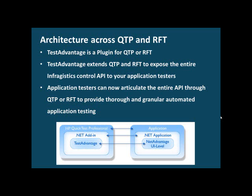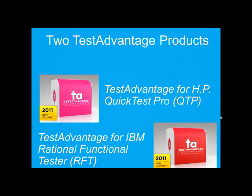Test Advantage is a plug-in that works with either QTP or RFT depending on which platform you buy it for. It works with Windows Forms controls and WPF controls — WPF support was still being worked on at the time of this video. Test Advantage is necessary whenever you are doing testing with Net Advantage controls on your forms. There are two products: one for QTP and one for RFT, with Windows Forms available today and WPF coming out shortly.